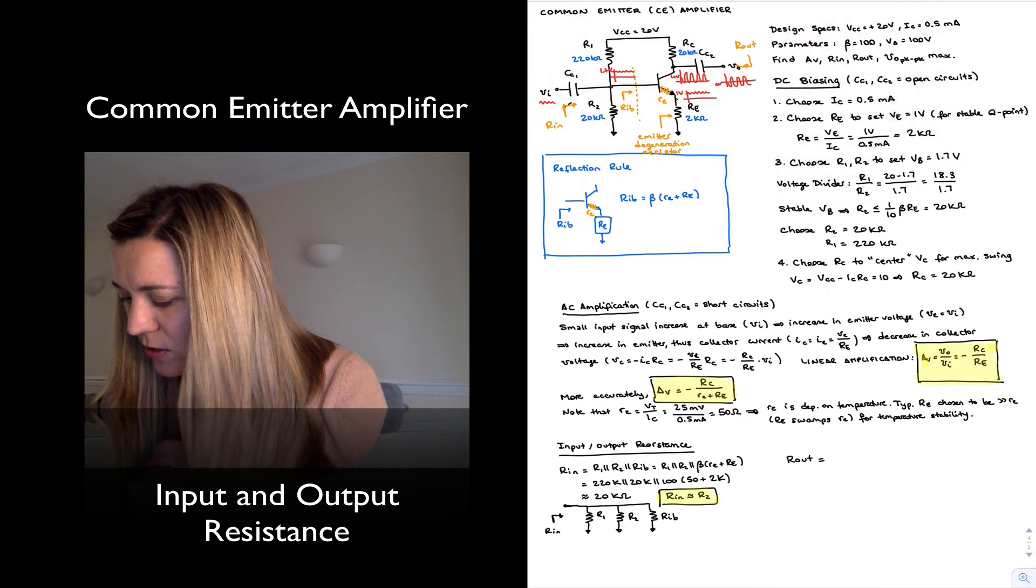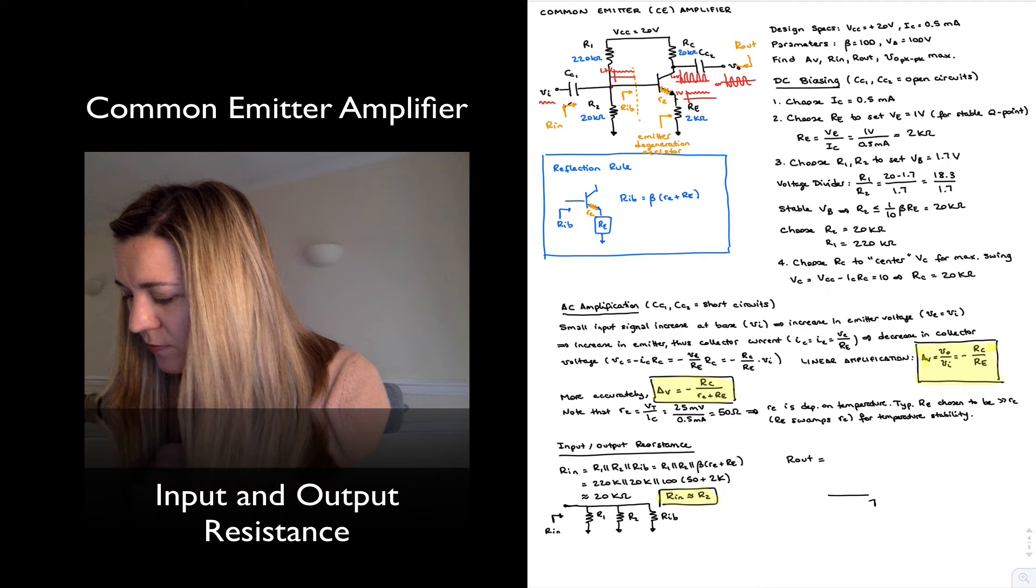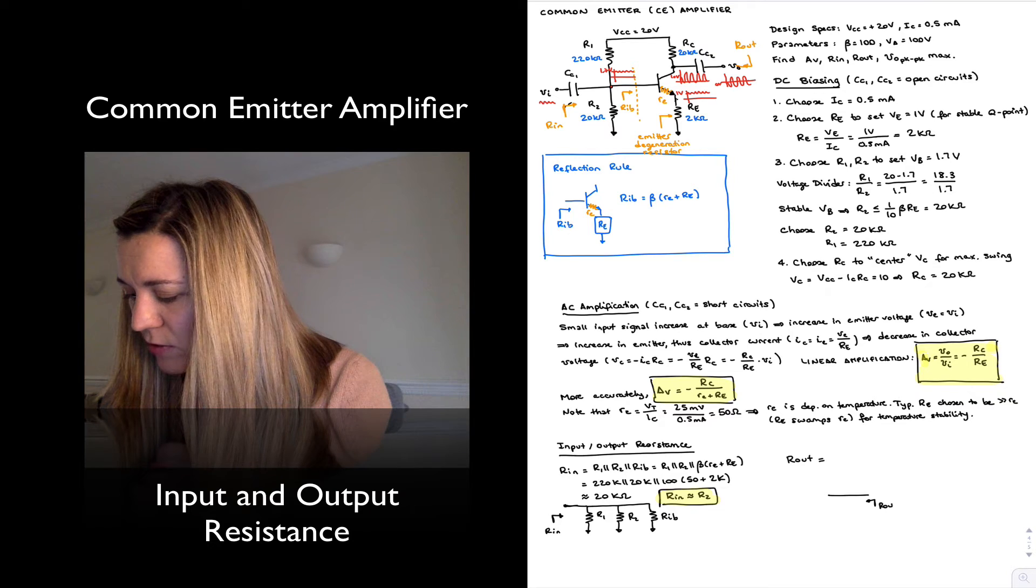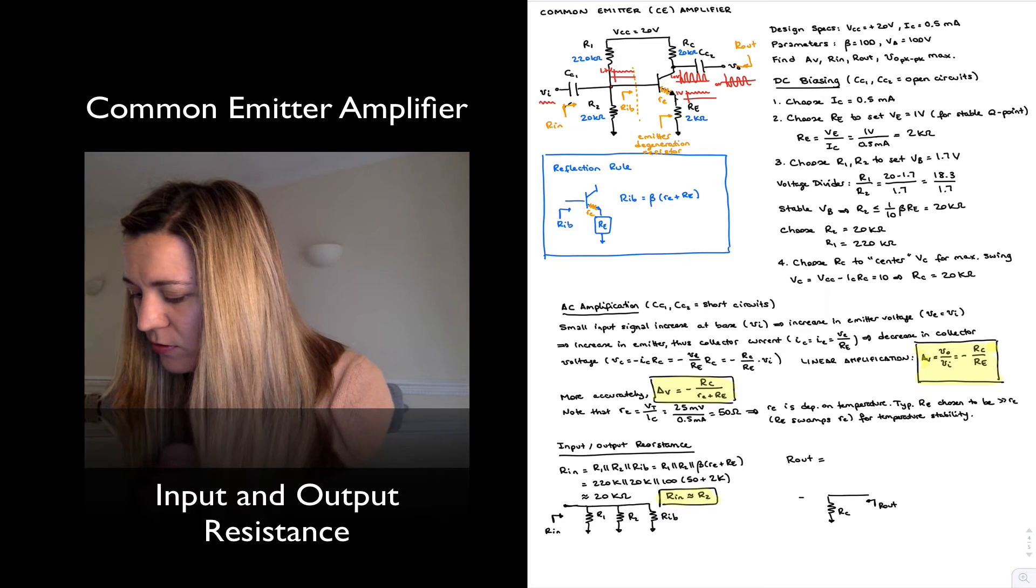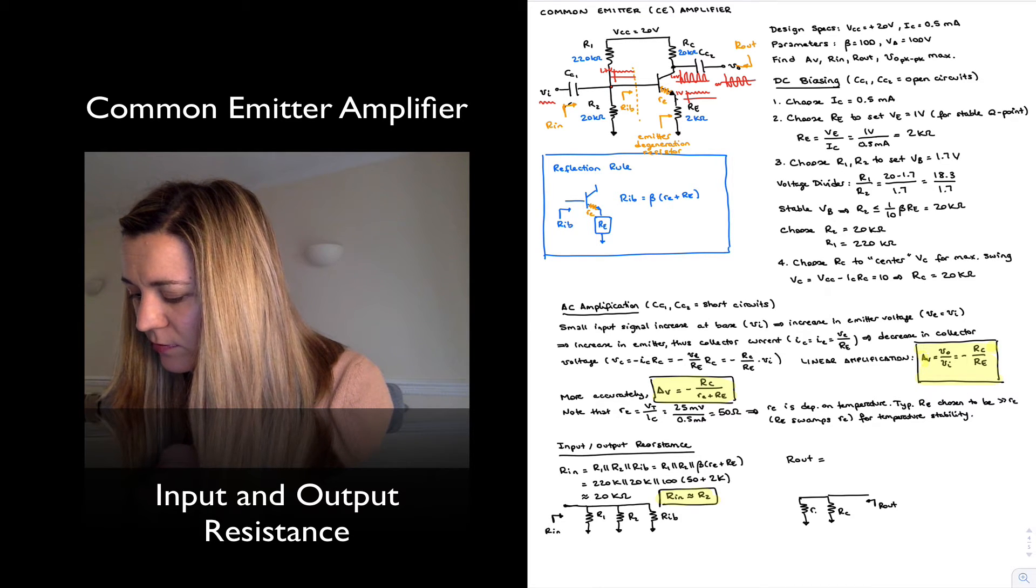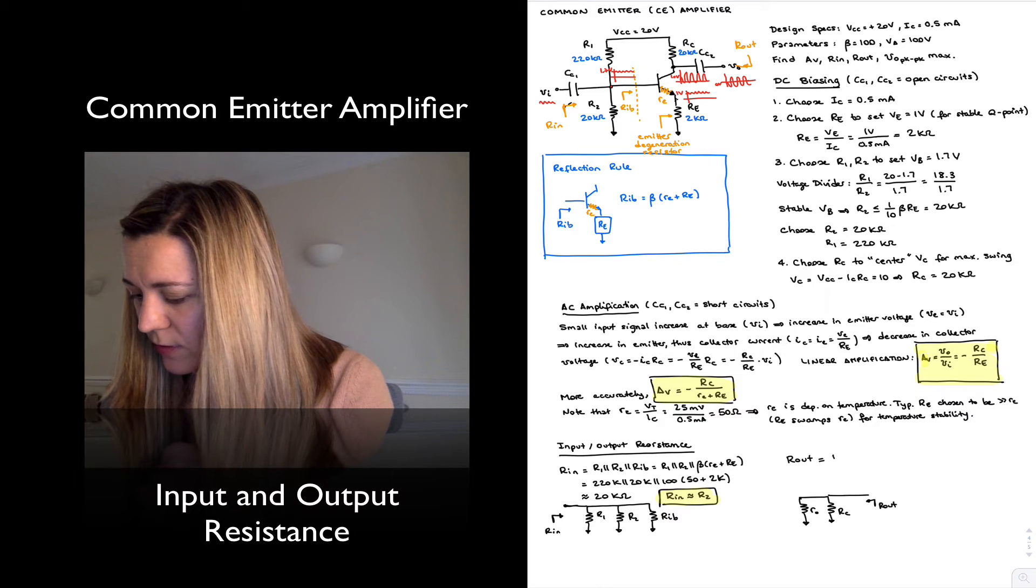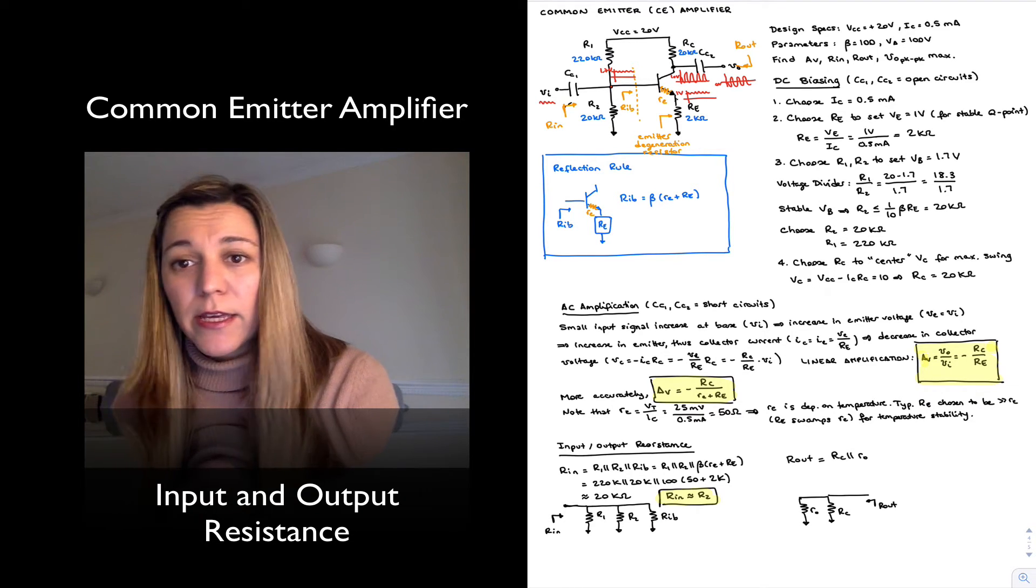What I'm left with is my Rout, looking into the Vout terminal, is a short and then RC connected to an AC ground and little ro. And so it will be RC in parallel with little ro.